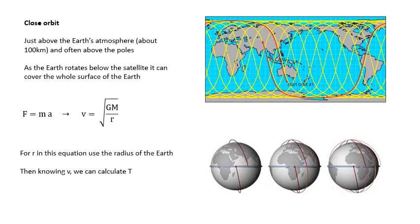There are two important orbits to know about. A close (low Earth) orbit is just above the Earth's atmosphere — only about 100 km up. A low polar orbit is very useful because as the Earth rotates, the satellite can observe every single point on the Earth's surface. You can adjust the orbit to look at any region within a couple of hours.